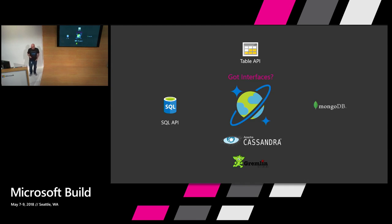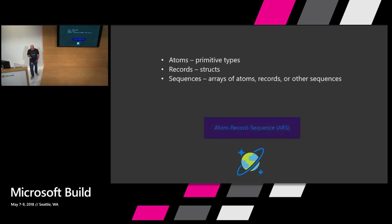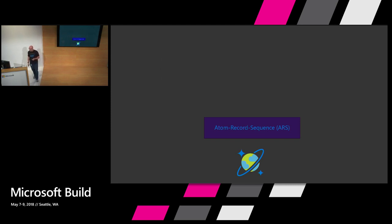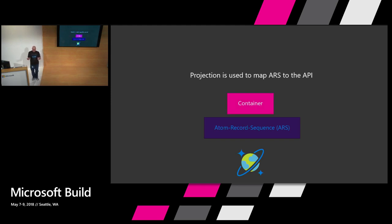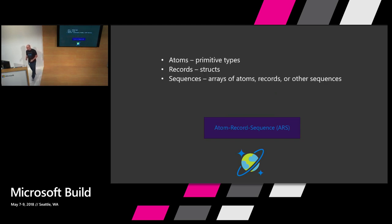These are the five currently supported interfaces: SQL, Table API (the key-value store), MongoDB (document), Cassandra (column), and Gremlin (graph). The way Cosmos DB pulls this off is by internally storing data in a special format called ARS, which is highly optimized — all the partitioning and replication happens with this internal storage format. It then uses projection to map concepts onto the APIs. So I have a container which is a list of entities I'm storing, which can include stored procedures, triggers, and user-defined functions. That gets projected based on which API I'm using.